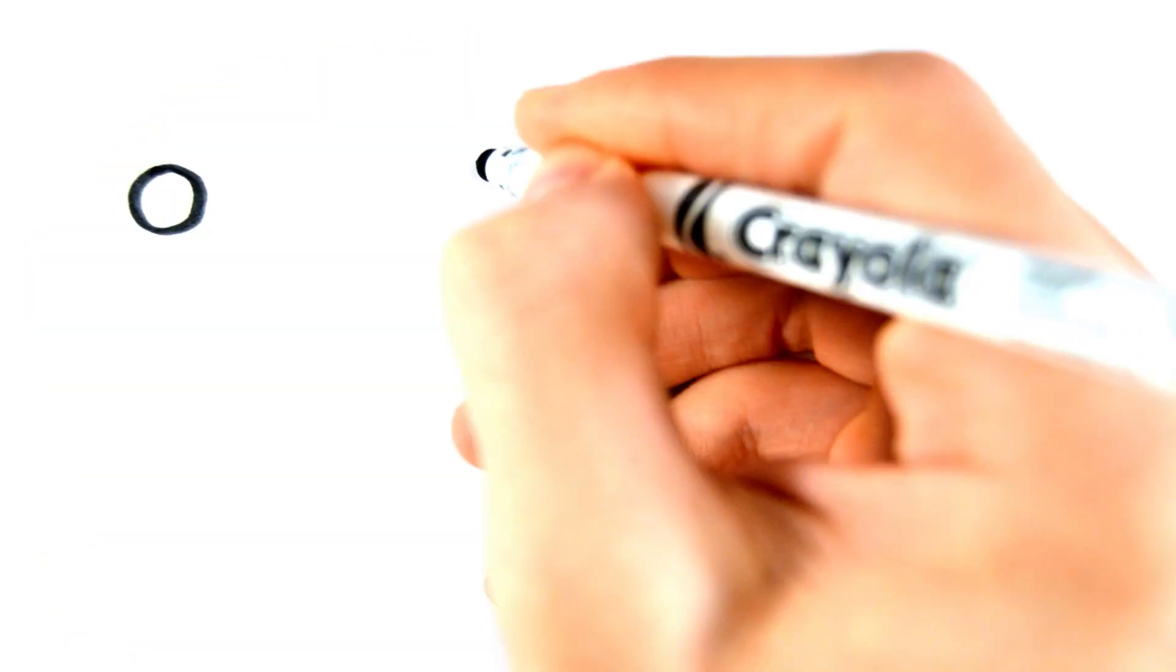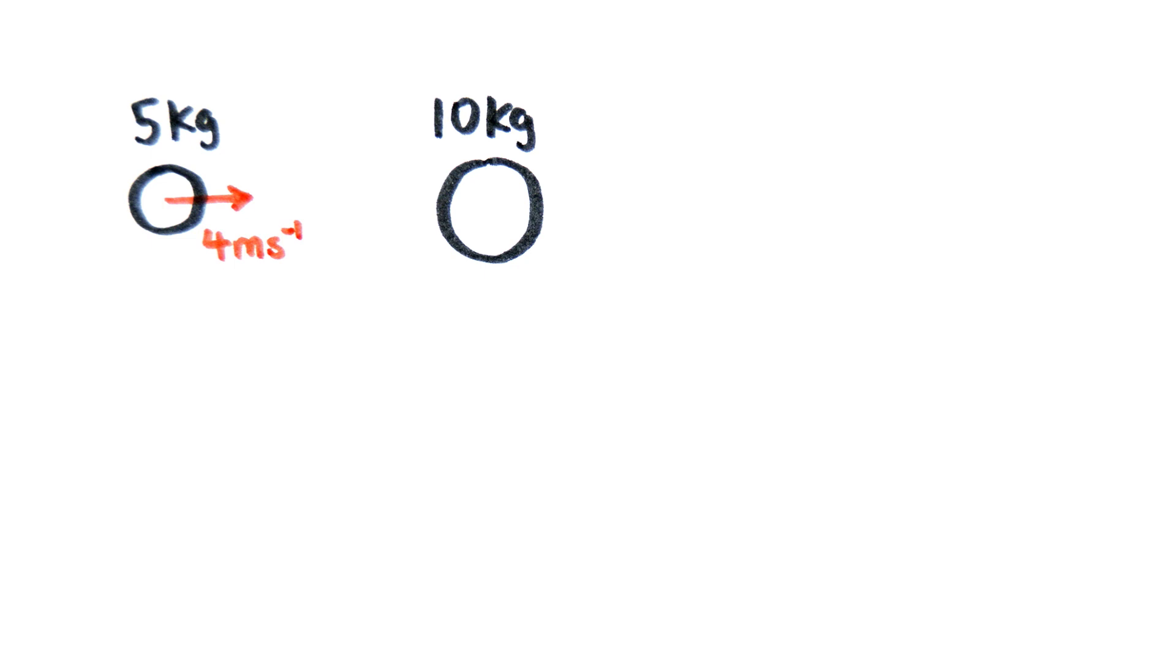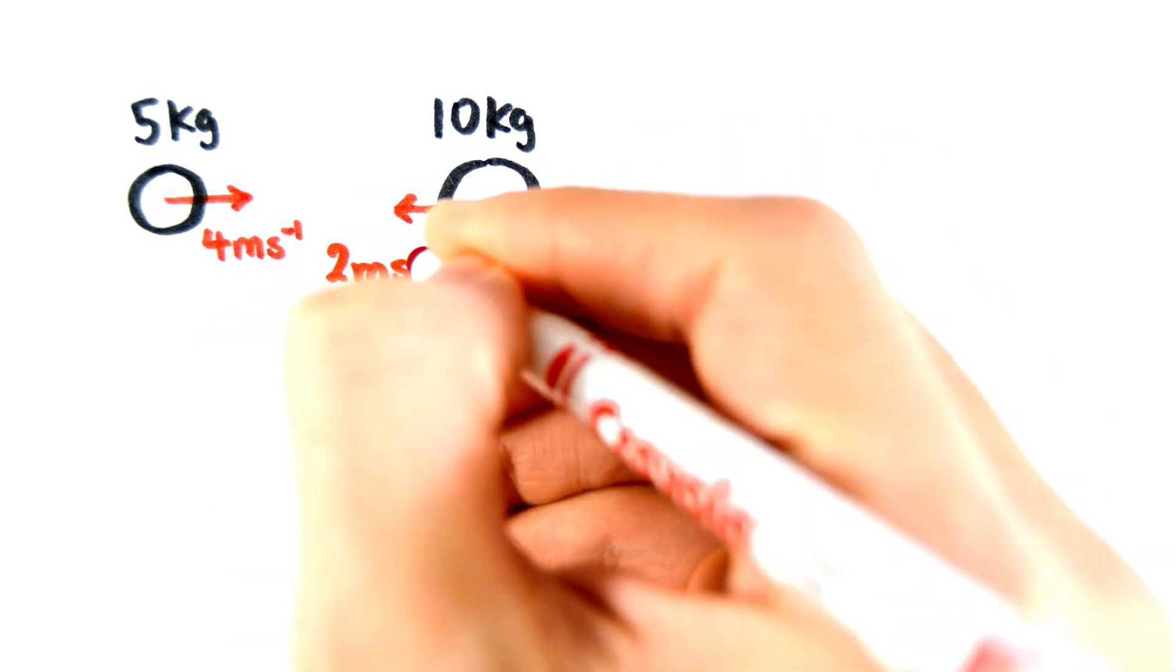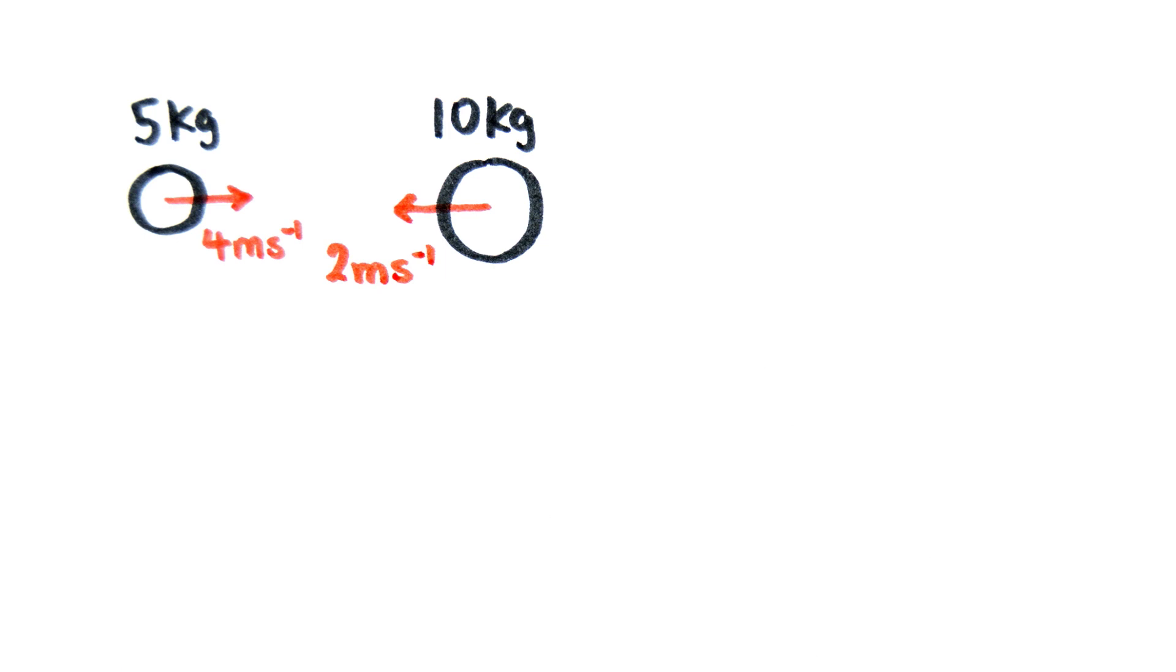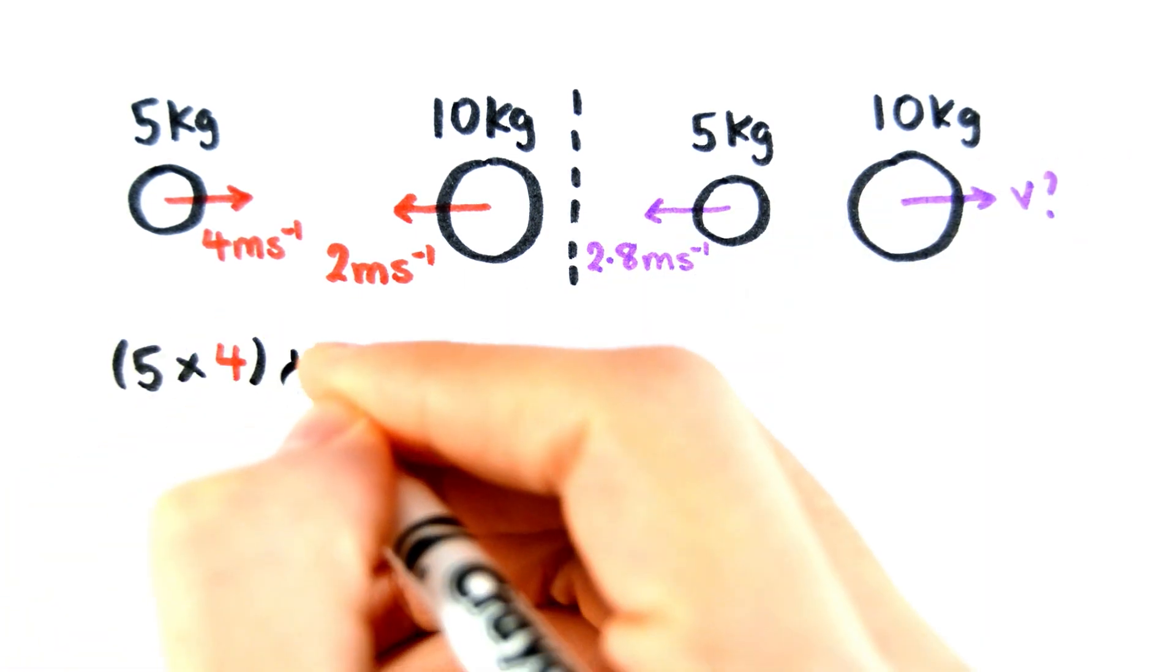For example, a particle of mass 5kg is moving at 4 meters per second, when it strikes a second particle of mass 10kg, moving at 2 meters per second towards the first particle. After the collision, the first particle has a velocity of 2.8 meters per second in the opposite direction to which it was first traveling.